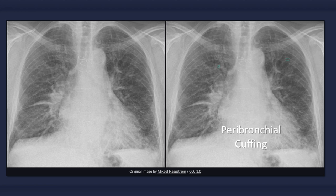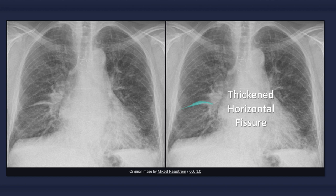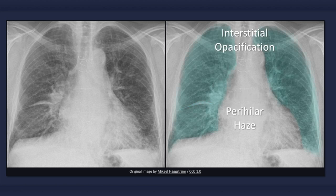Peribronchial cuffing is another discrete finding which occurs due to edema of the bronchial wall. When viewed head-on, it appears as a donut or ring; when viewed tangentially from the side, it appears as two parallel lines resembling tram tracks. Note that peribronchial cuffing can occur in other conditions as well, such as chronic bronchitis. Also evident in this image is a thickened minor, or horizontal, fissure — a finding easier to detect on a lateral radiograph. Collectively, interstitial edema results in widespread blurring of lung markings, with a hazy appearance of the lung fields and hilum bilaterally.